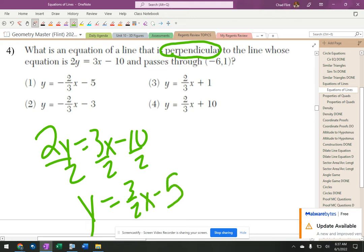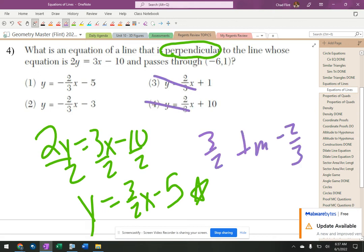So it's not there, nevermind. I was going to say, please don't pick this answer. But it says perpendicular, so the slope of this guy is 3 over 2, which means the perpendicular slope is negative 2 thirds. So gone, gone. So it's one of those two.